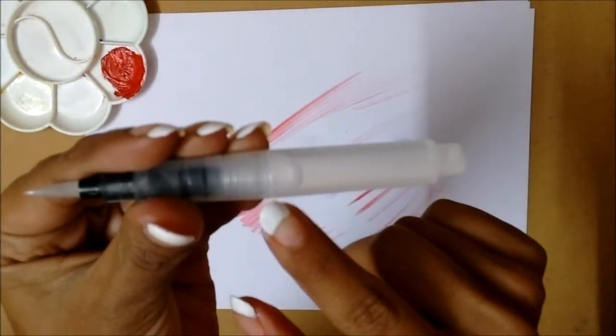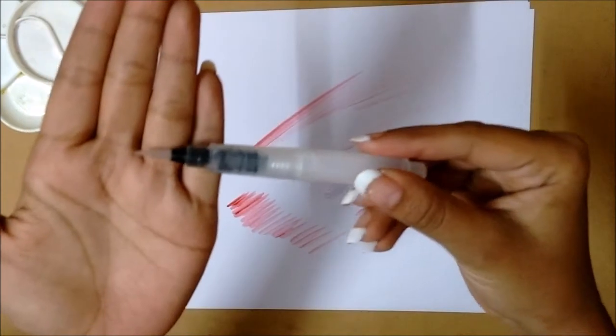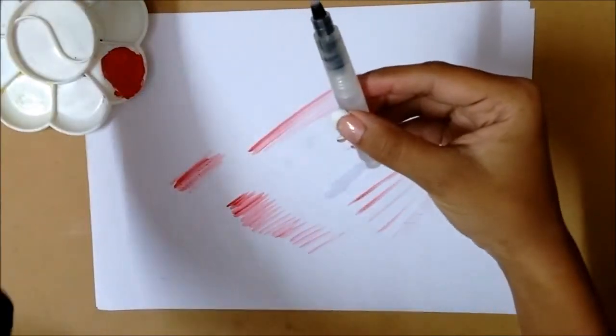You can see the water level has dropped. This brush works perfectly. You can get this online for 200 rupees or 3 dollars approximately.